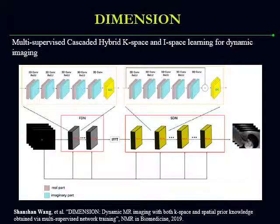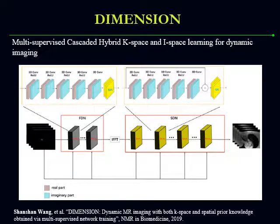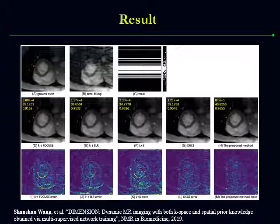This is another example named Dimension. In this work, both k-space-based learning and image-based learning are adopted with a multi-scale scheme. The k-space-based learning is better at capturing high-frequency information such as details and fine structures, while image-based learning is more applicable to suppress artifacts and noise. The proposed method has been compared with four state-of-the-art approaches, and as you can see from the visual comparison, it achieves better results closer to the ground truth, with the lowest error and better quantitative comparison.